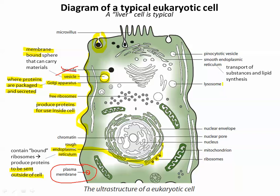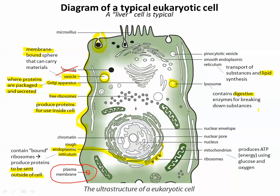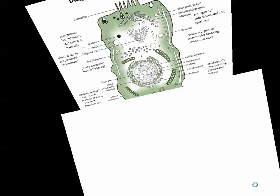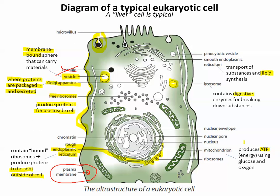Smooth endoplasmic reticulum — think lipids. Fats are made here: transport of substances and lipid synthesis. Lysosomes are very important when it comes to fighting off disease — they contain digestive enzymes for breaking down substances. Mitochondria we've talked about already: ATP is produced through cellular respiration, using glucose and oxygen to produce ATP, with carbon dioxide as a waste product.